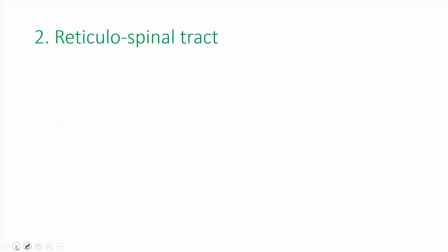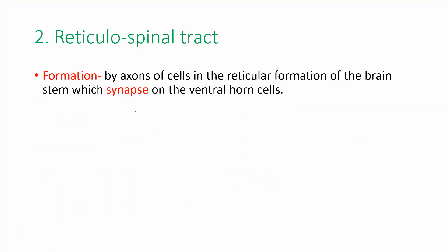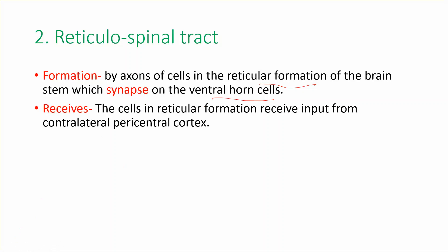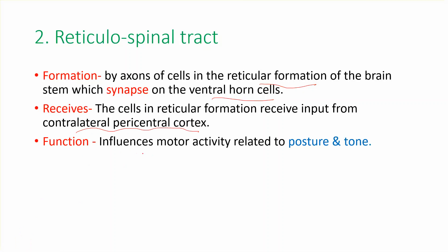The reticulospinal tract is formed by axons of the reticular formation of the brainstem, which synapse on the ventral horn cells. The cells of the reticular formation receive input from the contralateral pericentral cortex. Its function is to influence motor activity related to posture and tone.